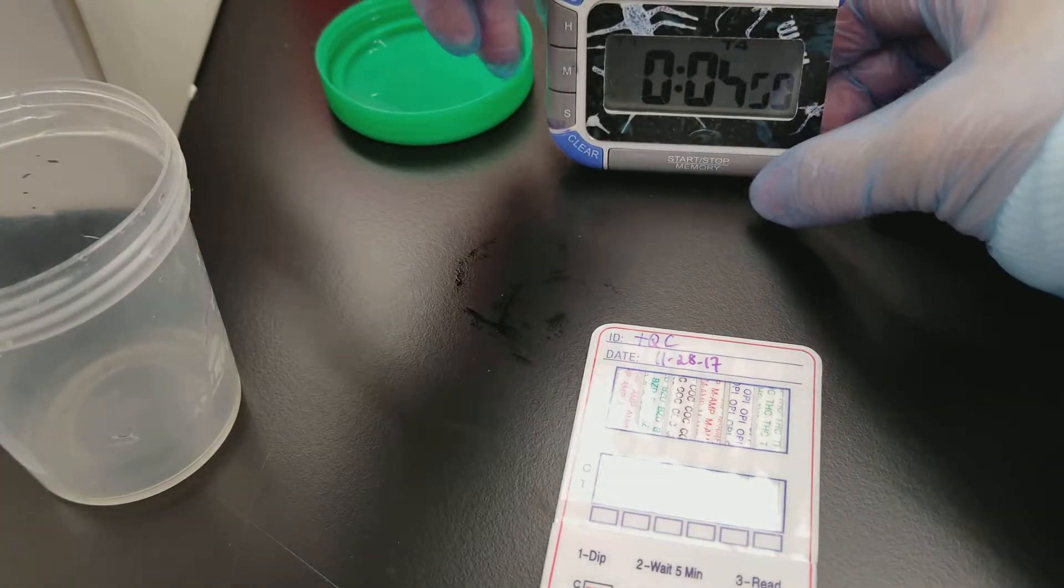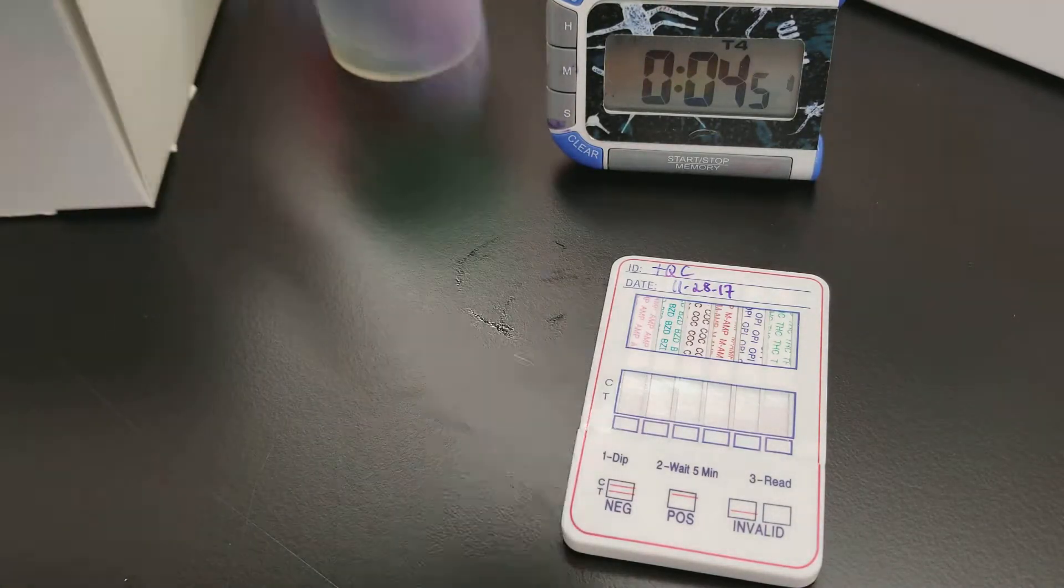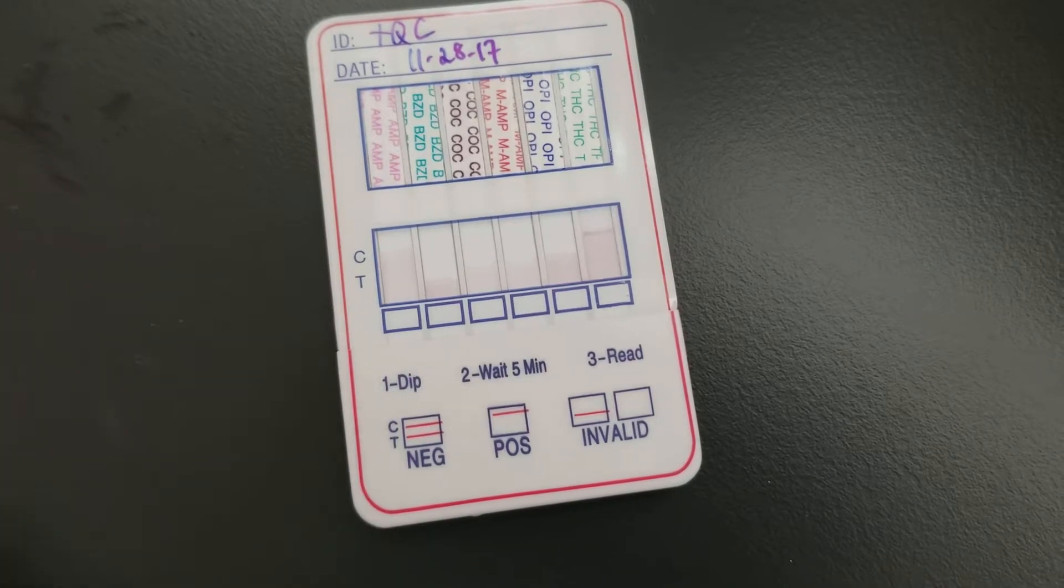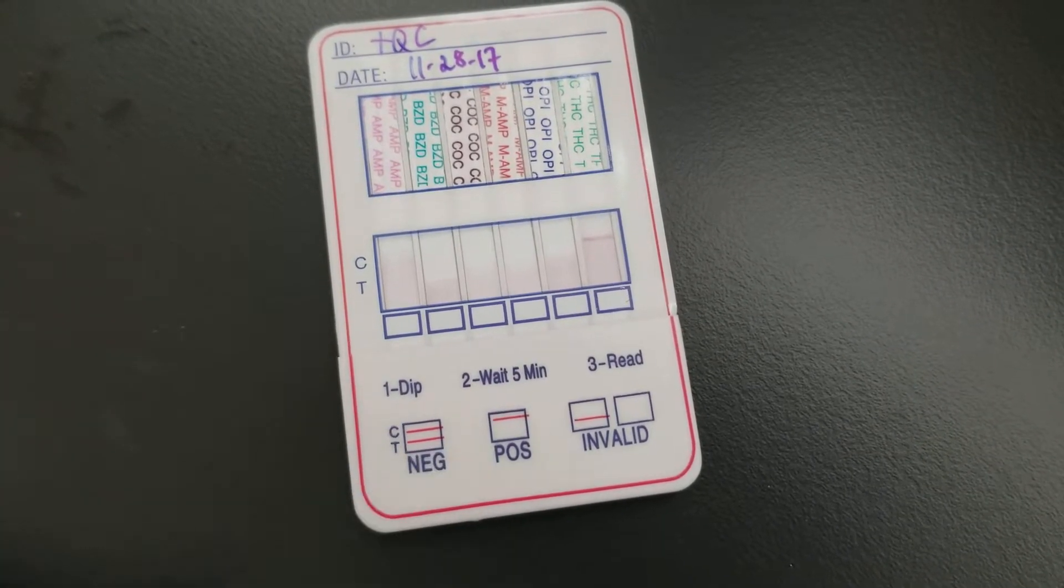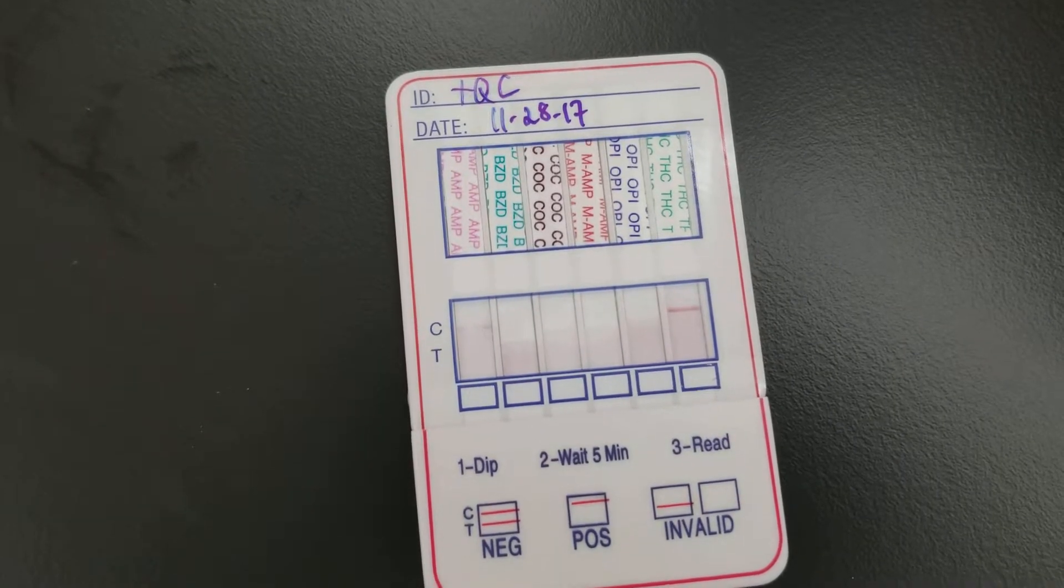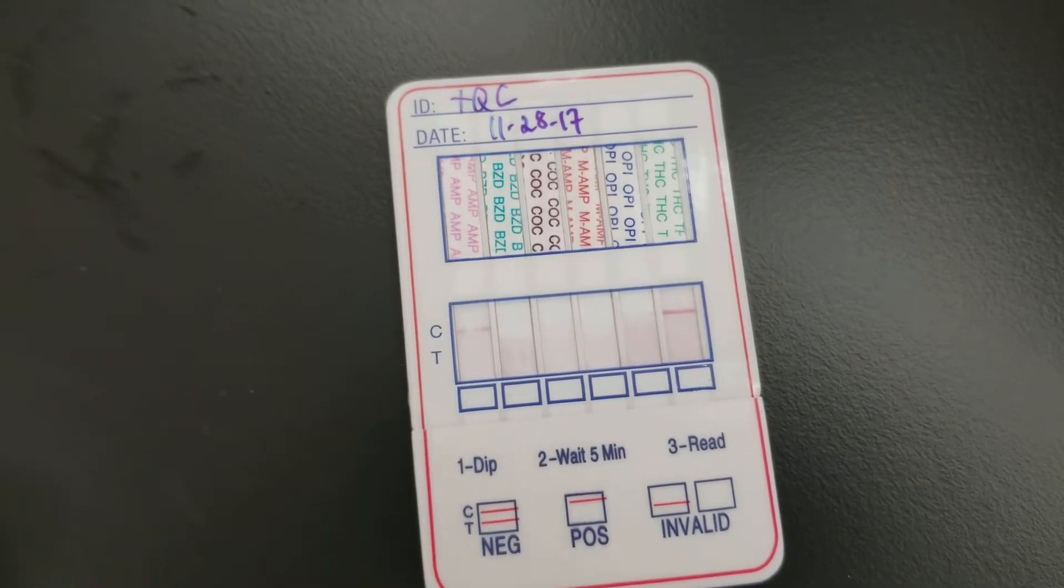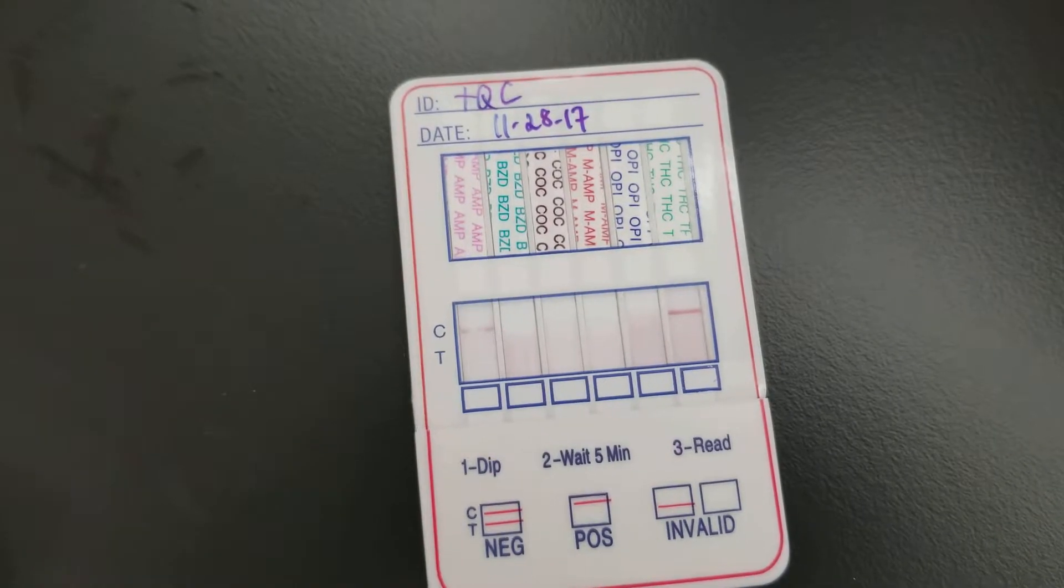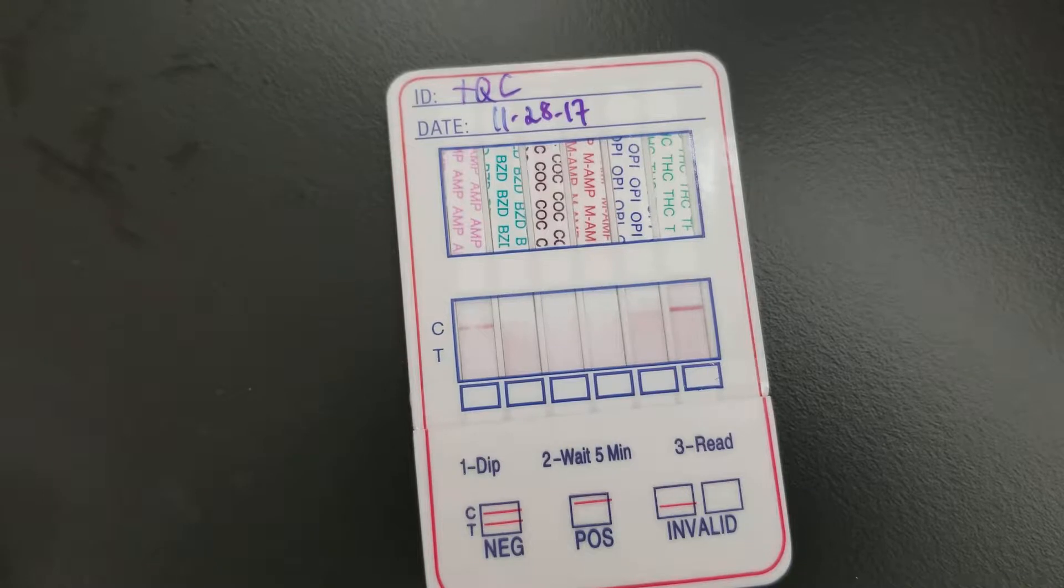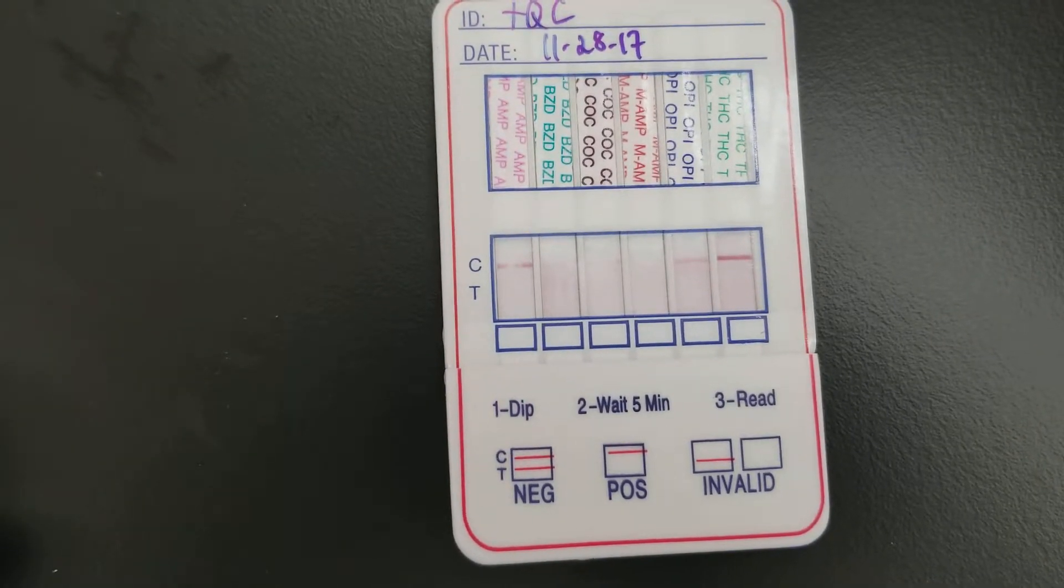The weird thing about this card is that if you look at the interpretation on the cover, it says that when you have a control line and a test line that are there, it's negative, whereas the control line alone is positive, which is totally weird because that usually is not what you would expect to see.